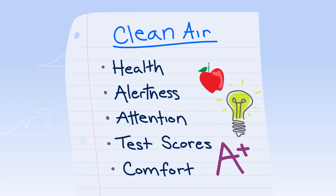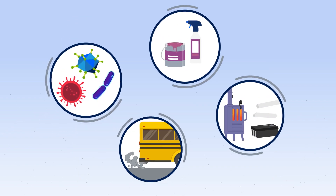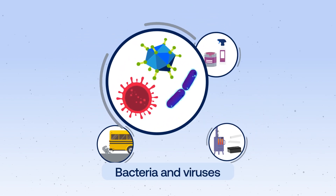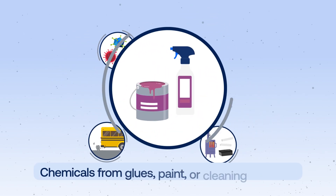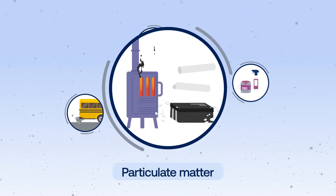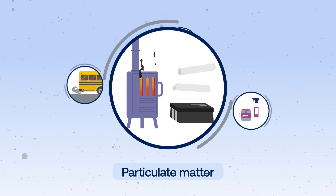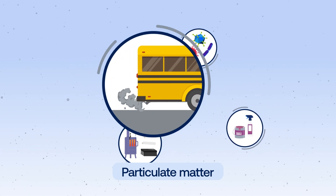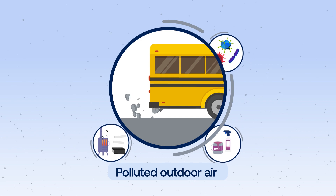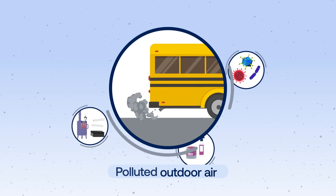But not all the air we breathe in school is clean. School air may have several pollutants including mold, bacteria, and viruses; chemicals from glues, paint, or cleaning supplies; and particulate matter from chalk dust, soil, new furniture, cooking, carpets, heaters, and wood stoves. Also, polluted outdoor air from busy traffic, nearby factories, and wildfires can come inside the school.